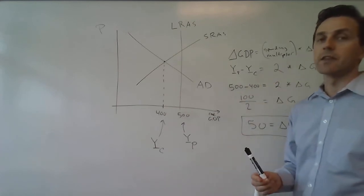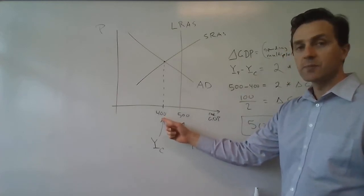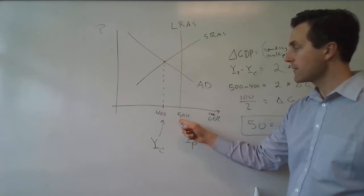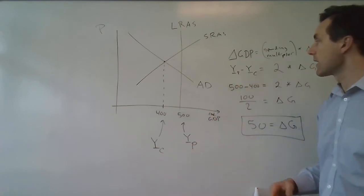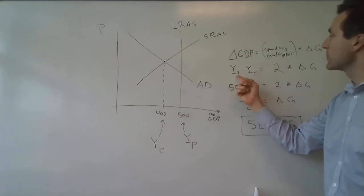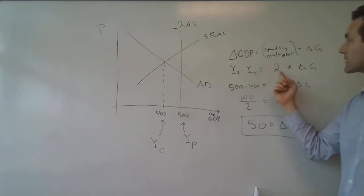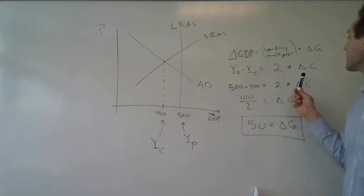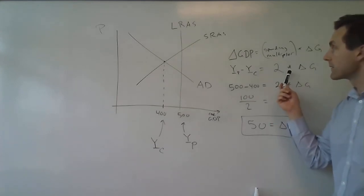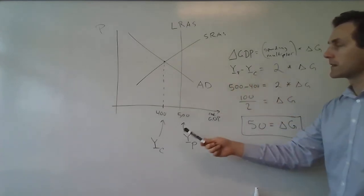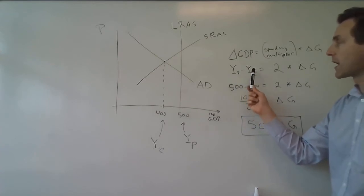The key here is that we want the change in GDP to equal the size of this gap, because we want GDP to increase by that much — we want to go from 400 to 500. So we need the change in GDP to be potential output minus current output: Y sub P minus Y sub C. That's the change in GDP we desire. Let's suppose the spending multiplier is two — we can then figure out the increase in government spending necessary, given that multiplier, to fill this output gap and have GDP increase by the amount needed to get from current output to potential output.